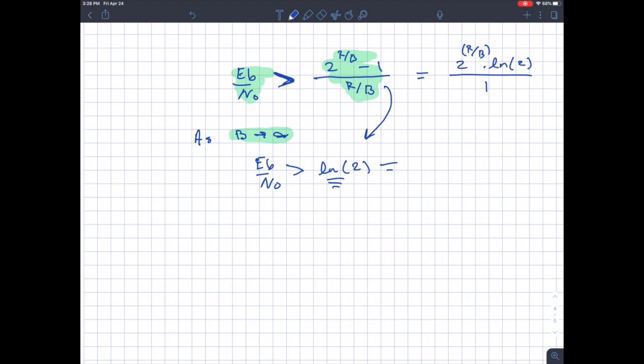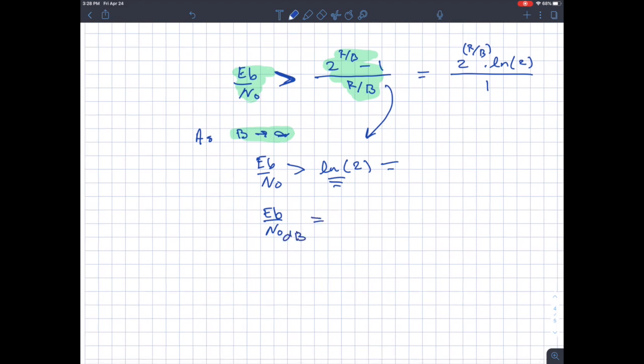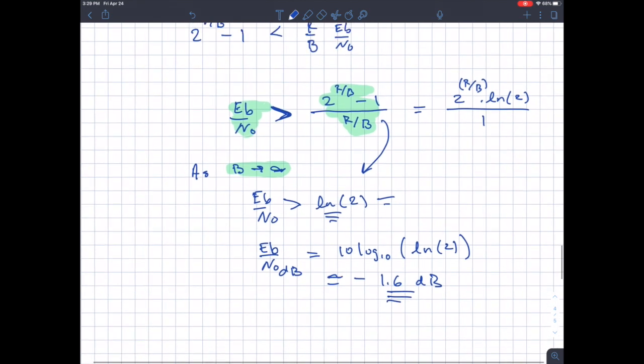And then what people do is then they convert this into dB. So if I did 10 log 10 of natural log of 2, I get minus 1.6 dB, or roughly that. And so this is known as the Shannon limit. You need at least minus 1.6 dB of energy per bit, Eb over n0, to be at least minus 1.6 dB, or really there's nothing coding-wise that you can do to communicate over that channel with any reasonable rate.